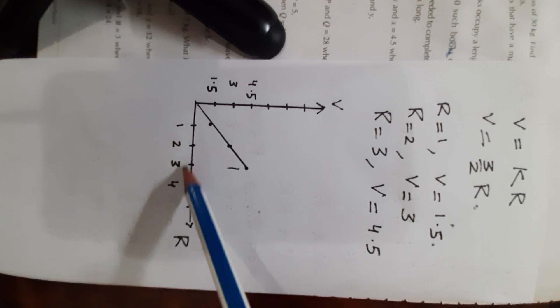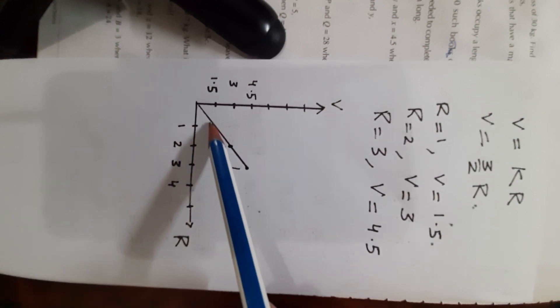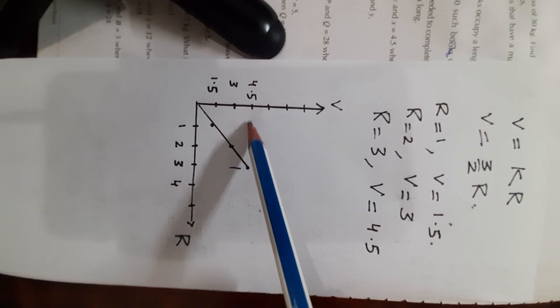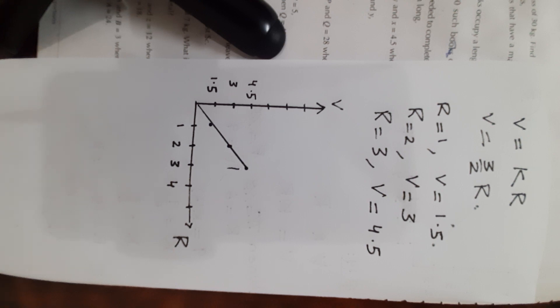For the graph of V against R, use V equals (3/2)R: assume R equals 1, 2, 3 giving V equals 1.5, 3, 4.5. Plot R on the x-axis and V on the y-axis. Join the points to form a straight line. This completes the solution of exercise 1a D2 seventh edition — subscribe the channel, thank you.